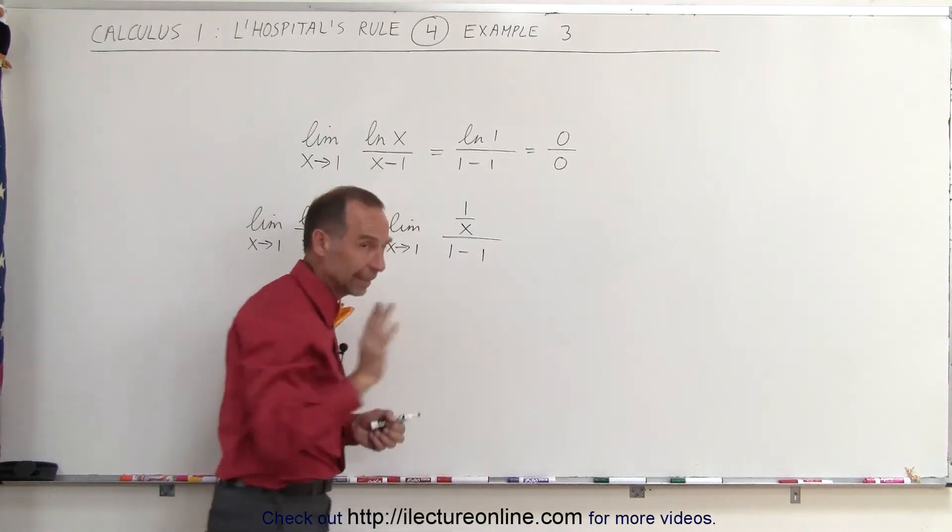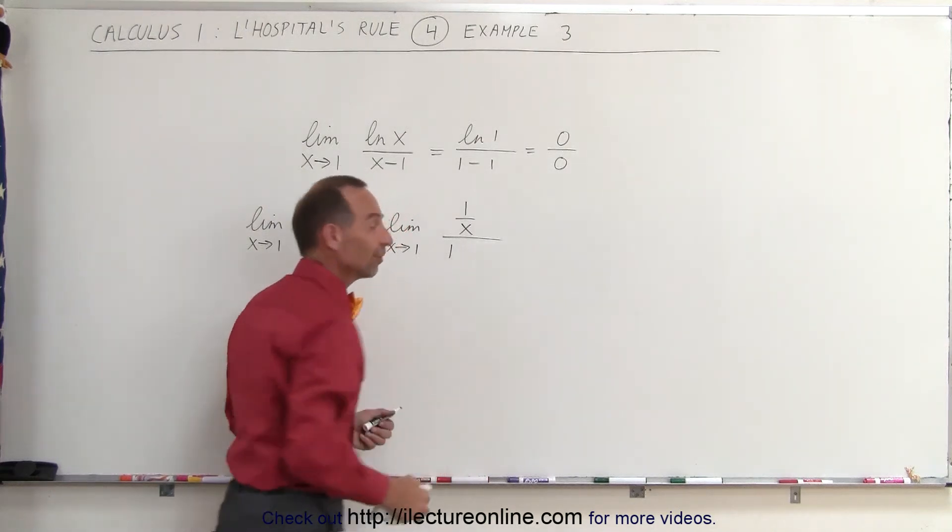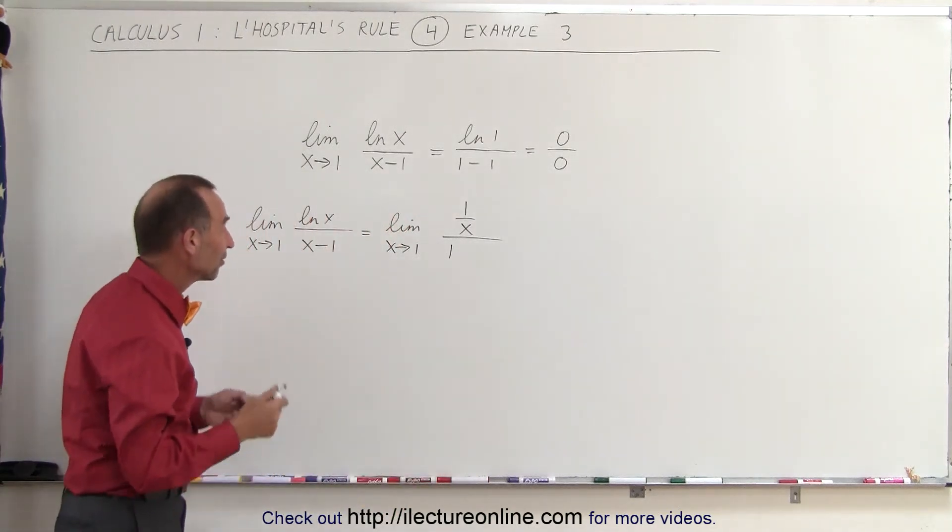Oh no, that would be a problem of course, 1 minus 1. The derivative of minus 1 is simply 0 so the derivative of the denominator is simply 1. So let me go ahead and put it over here.